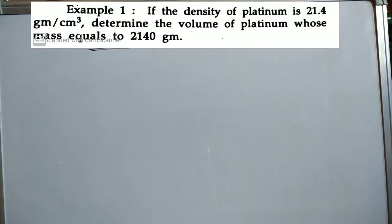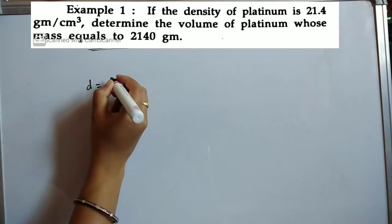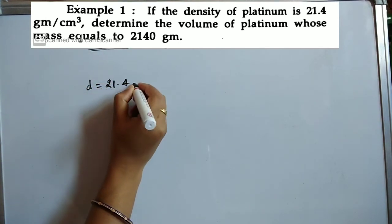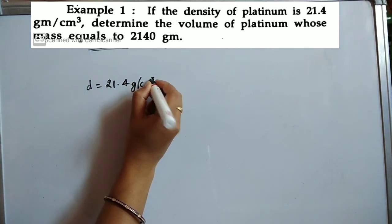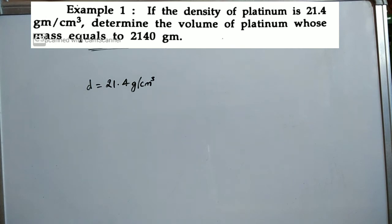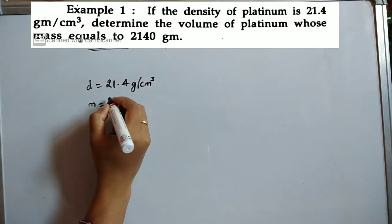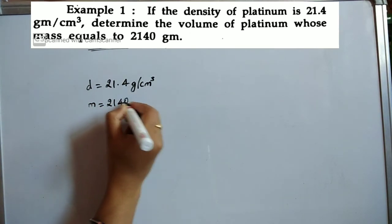Let us solve one problem. If the density of platinum is 21.4 g/cm³, determine the volume of platinum whose mass equals 2140 grams. Let us see what are the given values. Density of platinum is given as 21.4 g/cm³ and mass of platinum is given as 2140 grams.